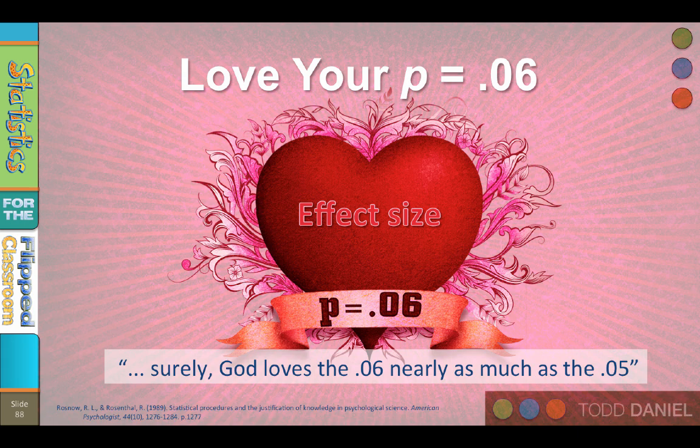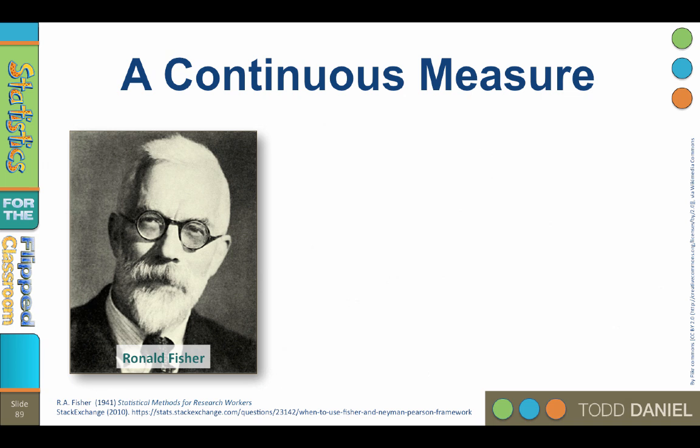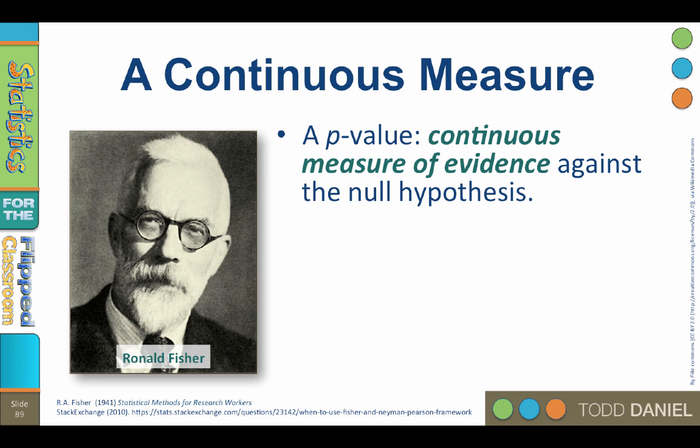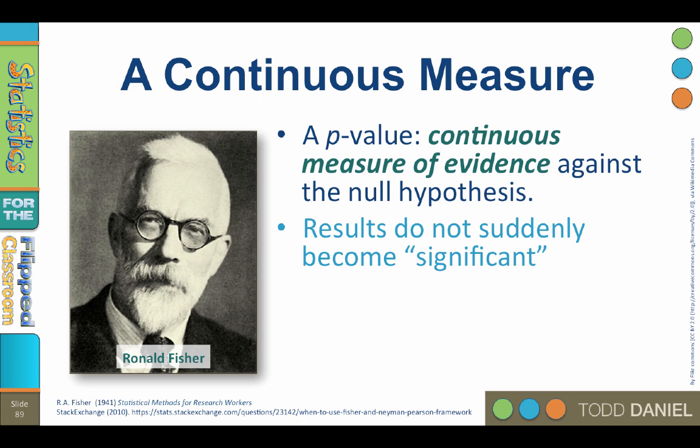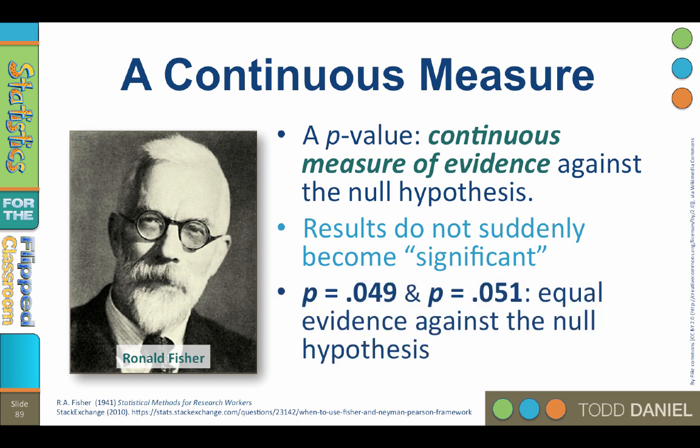And you know who would agree with them? Ronald Fisher. The guy who gave us that .05 standard. Fisher thought that the p-value could be interpreted as a continuous measure of evidence against the null hypothesis. He never presented 5% as some magical fixed value at which the results suddenly become significant. A p of .049 and .051 constitute an identical amount of evidence against the null hypothesis.